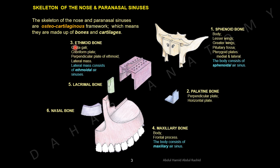The third bone is the ethmoid bone. It is also centrally located at the base of the skull, just anterior to the sphenoid bone. Both sphenoid and ethmoid bones are single bones. There is a flat triangular bone called the crista galli. On either side of the crista galli are perforated plates called cribriform plates. Below the crista galli is the perpendicular plate of the ethmoid bone, and on the lateral side is the lateral mass of the ethmoid bone, which consists of ethmoidal air sinuses.